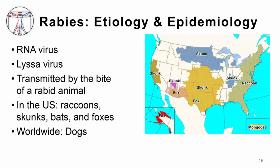Rabies is an RNA virus in the lyssavirus family, transmitted through the bite of a rabid animal. Other routes include contact with saliva by being licked, or inhalation of viral particles. There may be minor or no trauma noticed at inoculation, especially if a bat is the vector. Wild animals account for about 92% of reported cases in the United States; raccoons are most common, followed by skunks, bats, and foxes. Among domestic animals, cats are most frequently reported. Worldwide, however, exposure to rabid dogs is the big problem — they account for over 90% of human exposures and over 99% of human deaths from this infection.